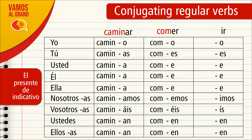And finally the verbs ending in IR, like the verb VIVIR. The conjugation would be: Yo VIVO (I live), Tú VIVES (you live), Usted VIVE (you live), Él VIVE (he lives), Ella VIVE (she lives), Nosotros VIVIMOS (we live), Vosotros VIVÍS (you all live), Ustedes VIVEN (you all live), and Ellos or Ellas VIVEN (they live).